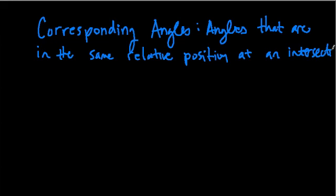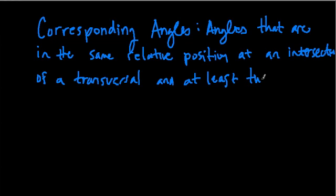The intersection is usually of a transversal and at least two lines. It could be more than two lines, and I'll show some examples.